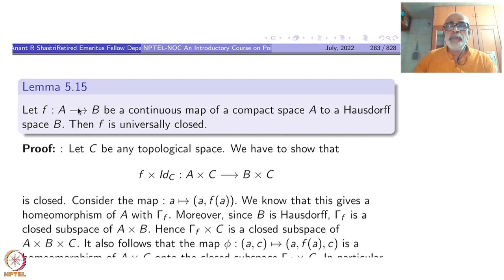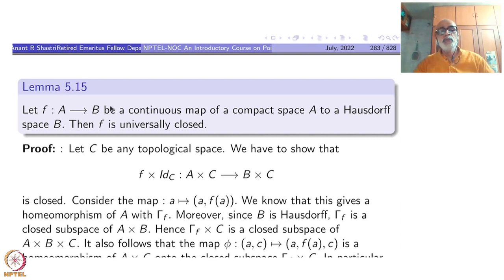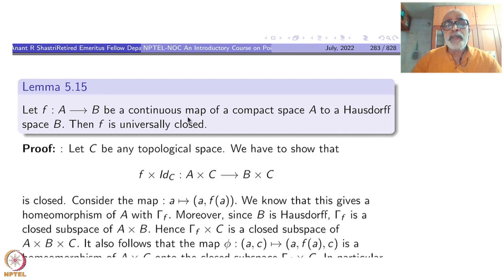We proved that a continuous bijection from a compact space to a Hausdorff space is a quotient map. Now the secret is open: this is not just a closed map but it is universally closed. From a compact space to a Hausdorff space, a continuous function is universally closed.